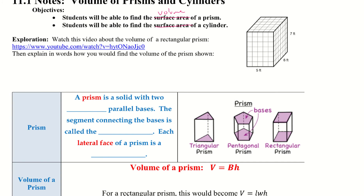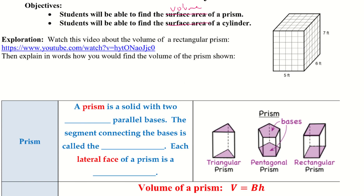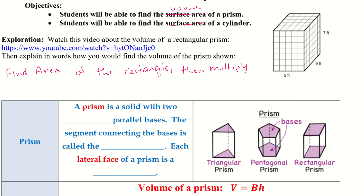So we want to explain in words how we would find the volume of the prism. Based on that video, it looks like they found the area of the rectangle and then multiplied by the height.